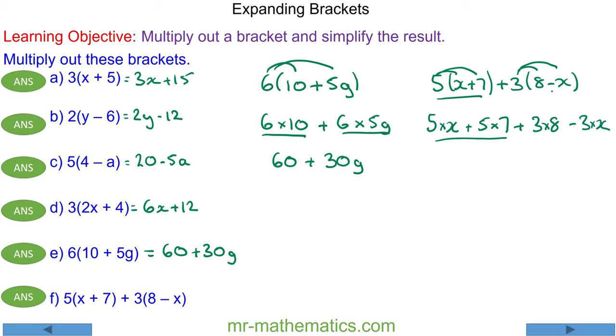We will simplify each term. 5 times x is 5x, 5 times 7 is 35, 3 times 8 is 24, and 3 times x is 3x. Now we can collect the like terms. 5x take away 3x makes 2x, and 35 add 24 is 59. So we have 2x plus 59.